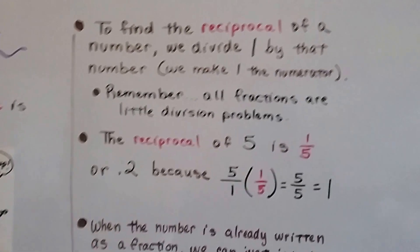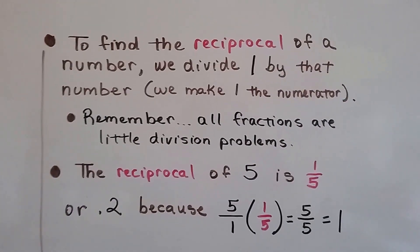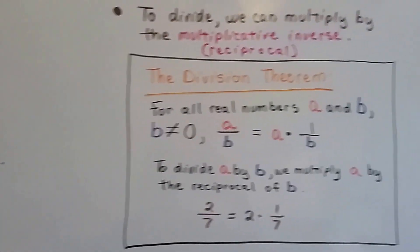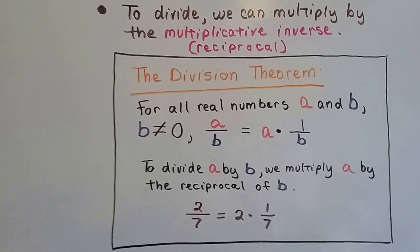To find the reciprocal of a number, we can divide 1 by that number. We make 1 the numerator. To divide, we can multiply by the multiplicative inverse, the reciprocal.